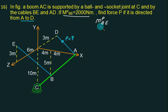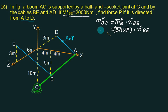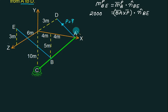To find P, we write: moment of P about line BE equals (BA cross P) dot (unit vector BE) equals 2000. Point A is on the x-axis at distance 8 from the origin, so coordinate of A is 8, 0, 0.